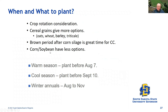When to plant: consider the crop rotation. Cereal grains give more options. The brown period after corn silage is an awesome time to take advantage of cover crop planting. The corn-soybean rotation has a lot fewer options — that's where flying in cereal rye at corn maturity has been successful. Warm season cover crops should be planted before August 7th; cool seasons before September 10th since they handle colder temperatures better; winter annuals anytime between August and November. We've had producers put in cereal rye with the no-till drill — it never even came up — and there it is in the spring growing and looking halfway decent.